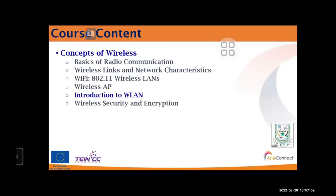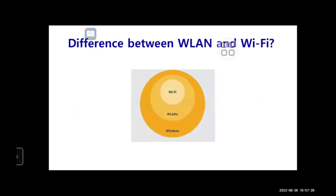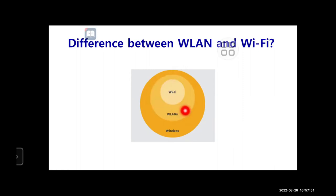WLAN is a wireless distribution method for two or more devices. The terms WLAN and Wi-Fi are often used interchangeably, but they are quite different. Wi-Fi is just a type of WLAN, so all Wi-Fi networks are WLANs, but not all WLANs are Wi-Fi.